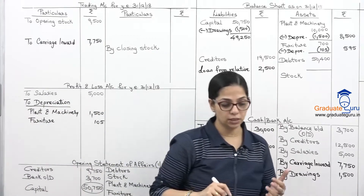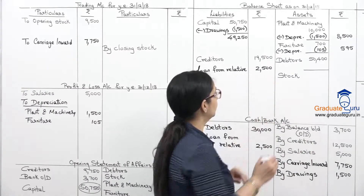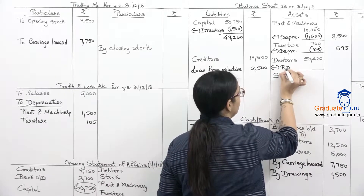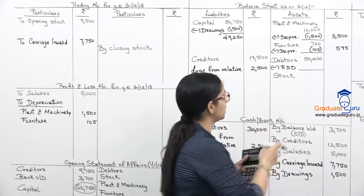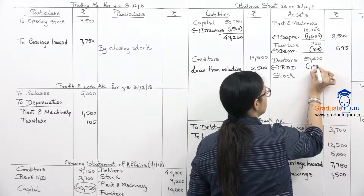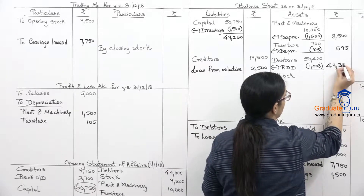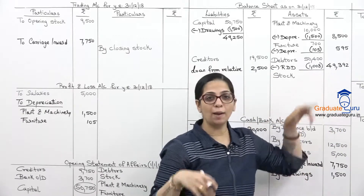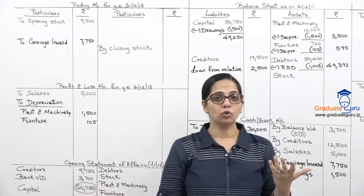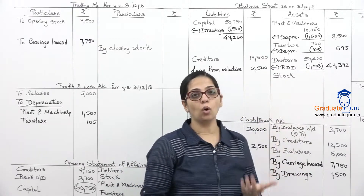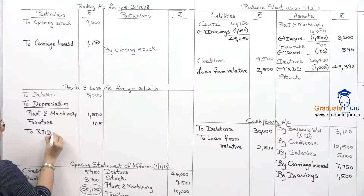Provision for doubtful debts at 2% on closing dators: 50,400 × 2% = 1,008. We subtract this from dators in the balance sheet, giving 49,392. This is also an expense, so it goes to P&L as RDD on dators — 1,008.